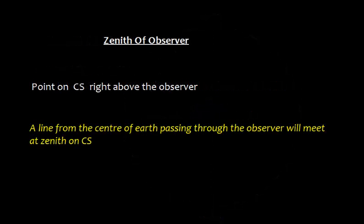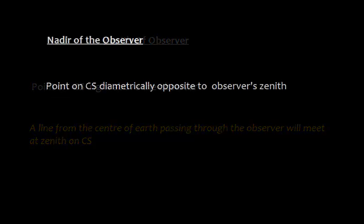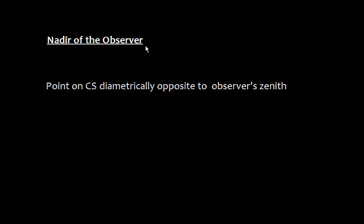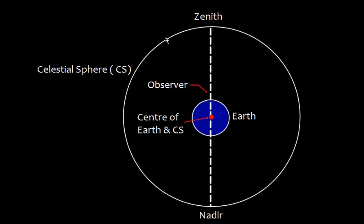We can define that a line from the center of Earth passing through the observer will meet at zenith on the celestial sphere, and the nadir of the observer is the point which is diametrically opposite to the observer's zenith, as shown in this diagram.